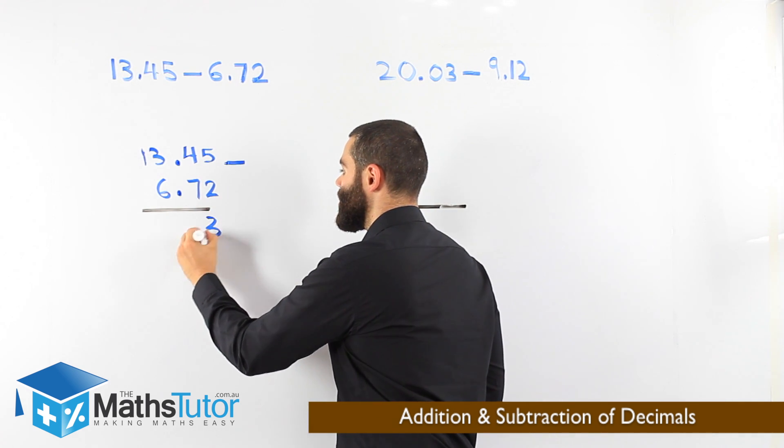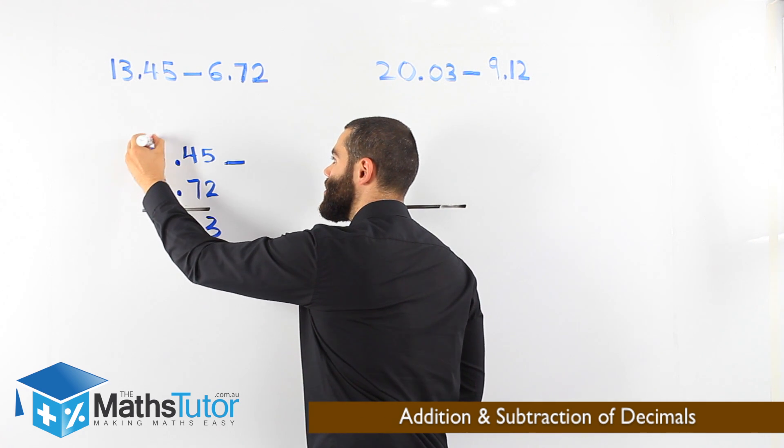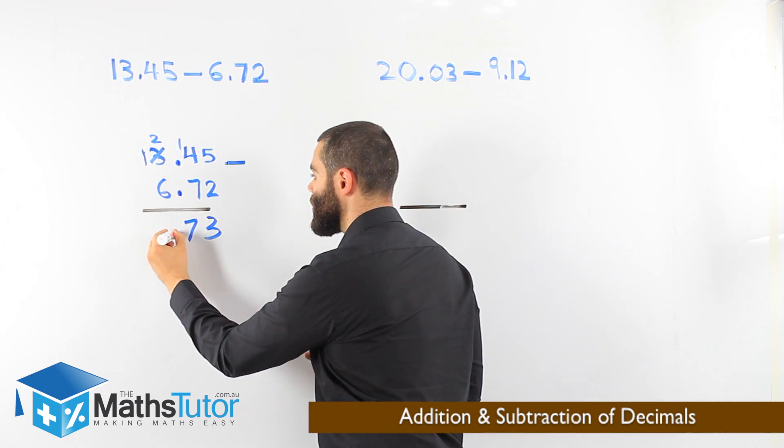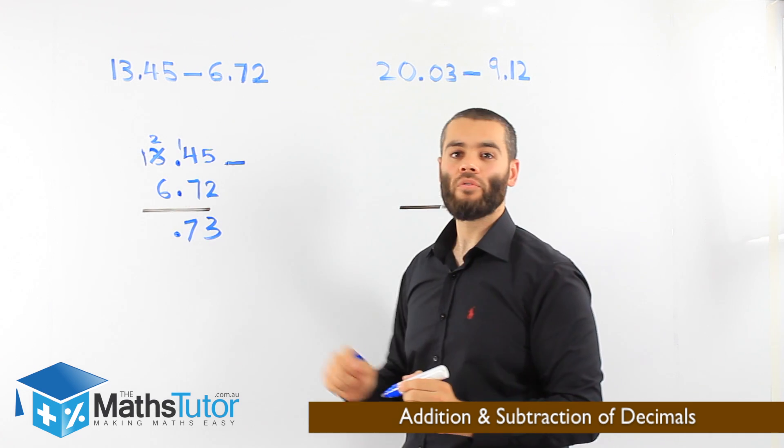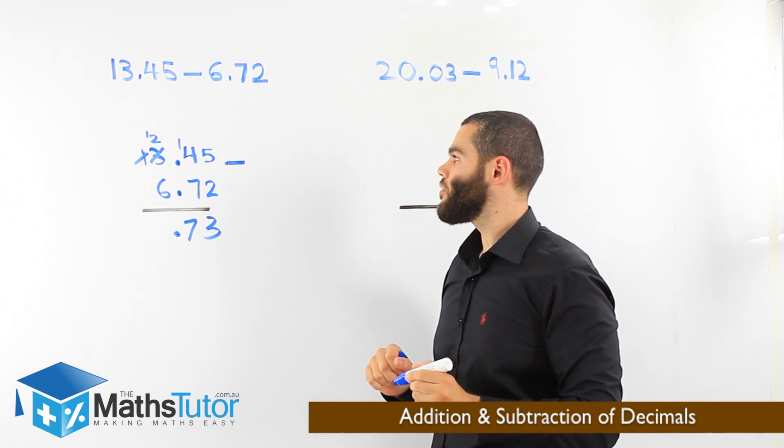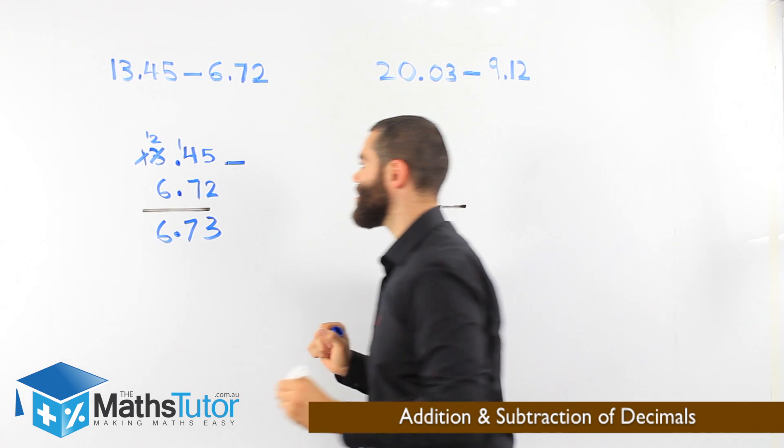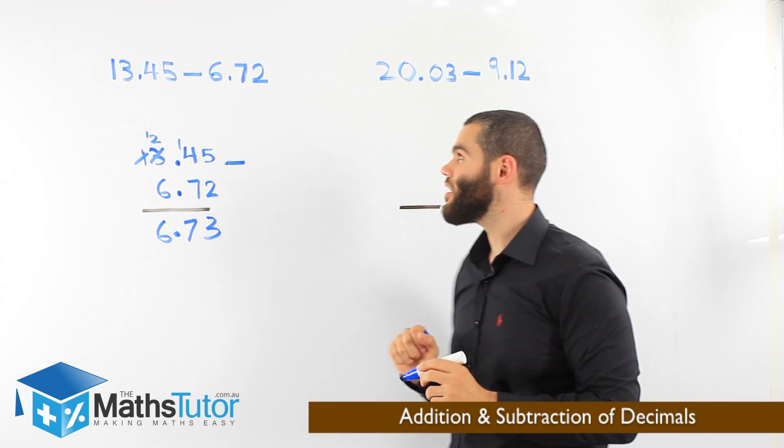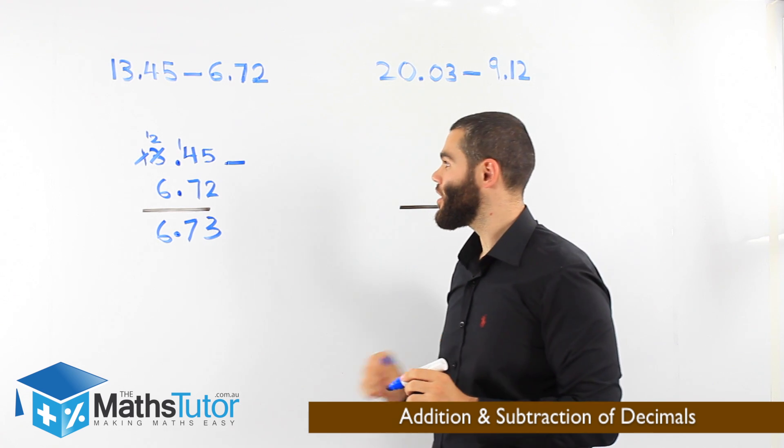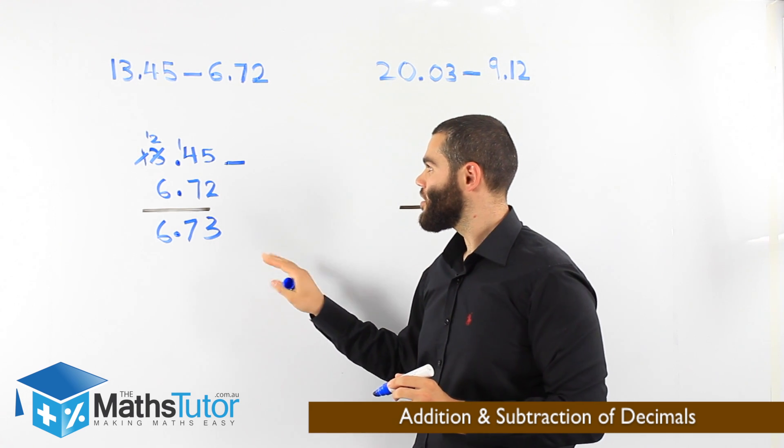5 take away 2 is 3. 4 take away 7 we can't do, so we have to borrow. 14 take away 7 is 7. We put our point. 2 take away 3 we can't, so we borrow again. And 12 take away 6 is 6. So, 13.45 take away 6.72 is 6.73. As you can see, once aligned, everything becomes straightforward and we'll solve it very easily.